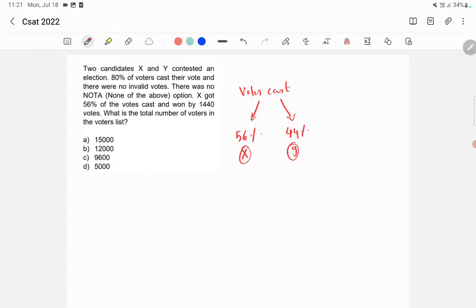Now the difference between their votes is 1440 because that's the votes by which X won the election. So this difference between them is 12%. So 12% is the difference because 56 minus 44 is 12. So 12% is 1440.